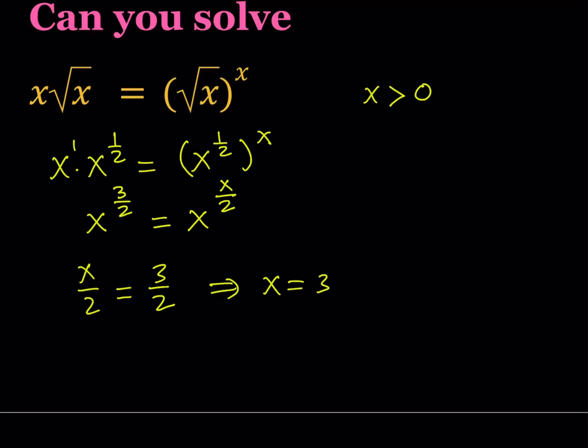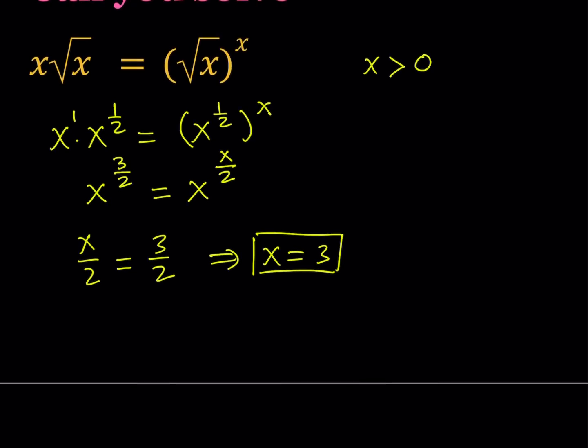But let's go ahead and see if there are any other solutions. Well, if you have x in the base, obviously, we have to consider the case where x might be 1 or negative 1. x equals 0 is definitely not possible. x equals negative 1 is also not possible. Because at the beginning, remember, we said that x must be greater than 0. So the only thing we need to check is x equals 1. Is x equals 1 a possible solution? Let's go ahead and check it out.